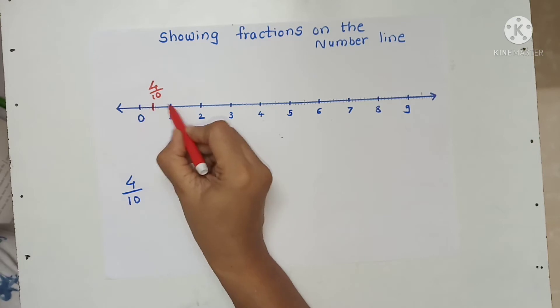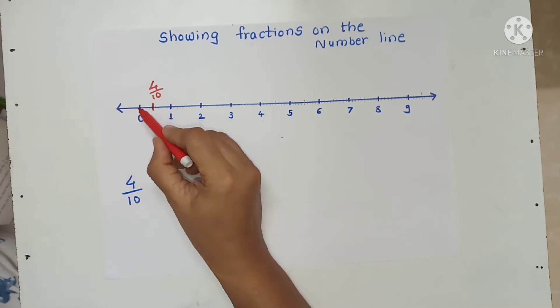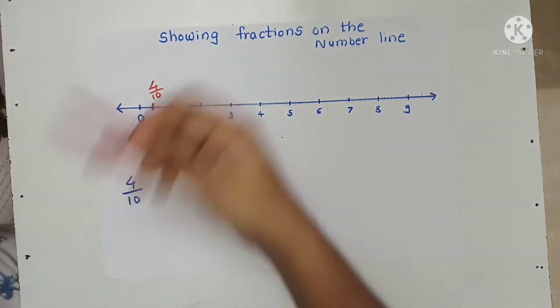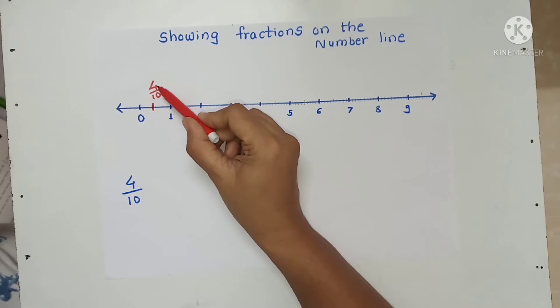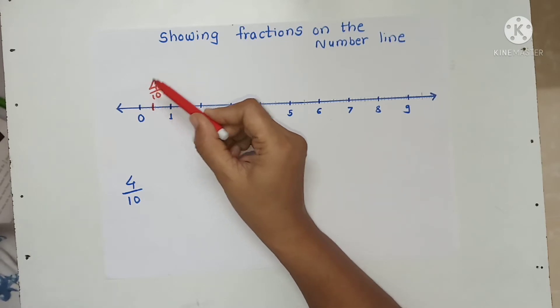There are 10 lines from 0 to 1. The 4th mark from 0 shows the fraction 4 upon 10.